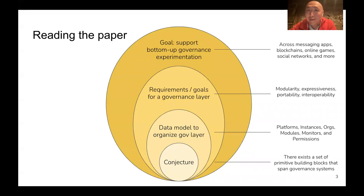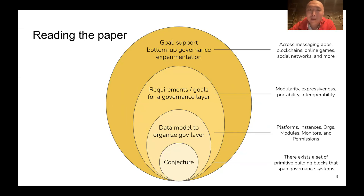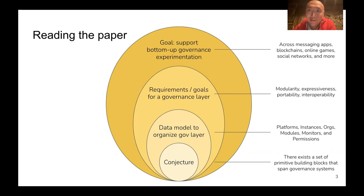Reading the actual paper, you'll find it's broken into four sections. At the very top, there is a discussion of what's the motivation here — really to support bottom-up kinds of governance experimentation across a wide range of online communities. How can we support that governance experimentation? We want to build a governance layer and articulate the kind of requirements that governance layer should respect, including things like modularity and expressiveness. We then define a data model which organizes that governance layer, both software and experiments within it. And finally, we connect all of the above to a set of conjectures and social science concepts.